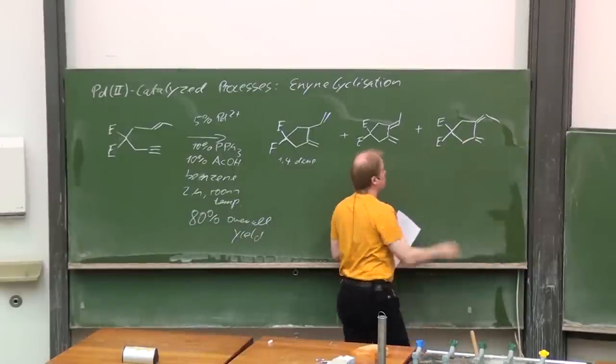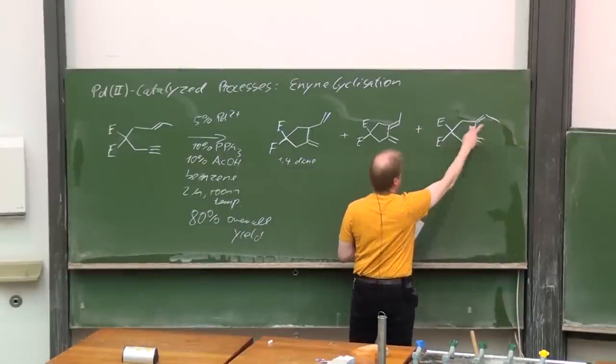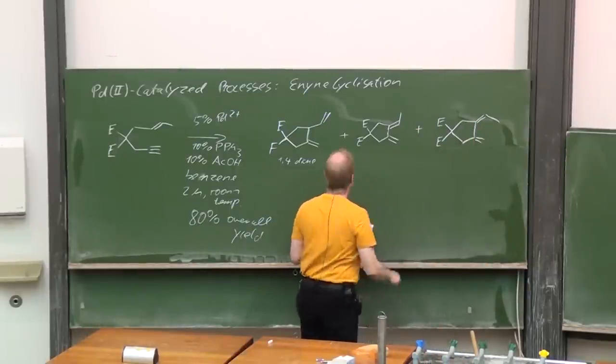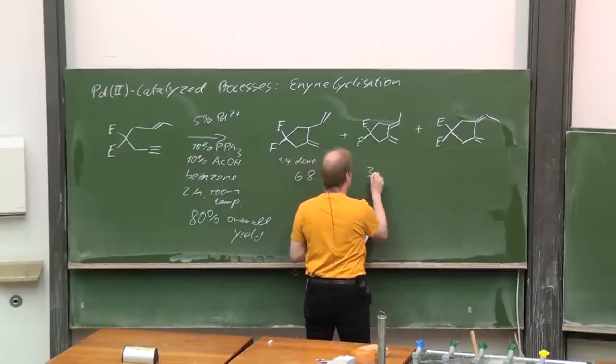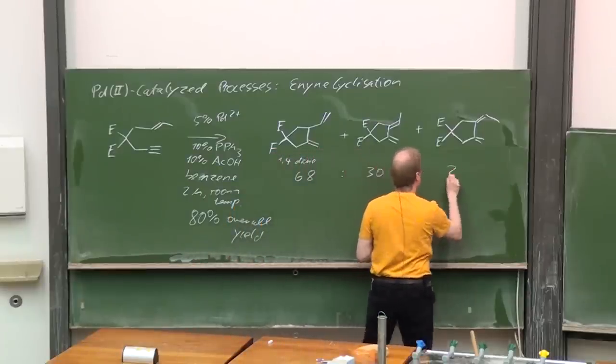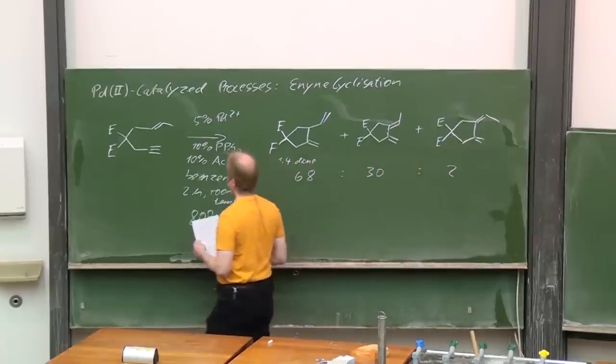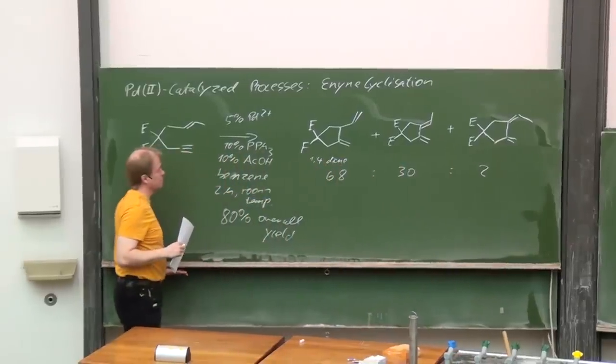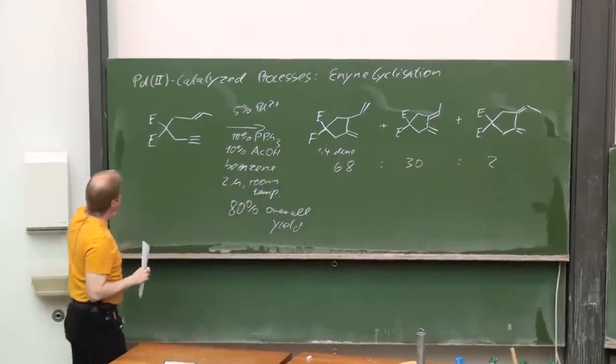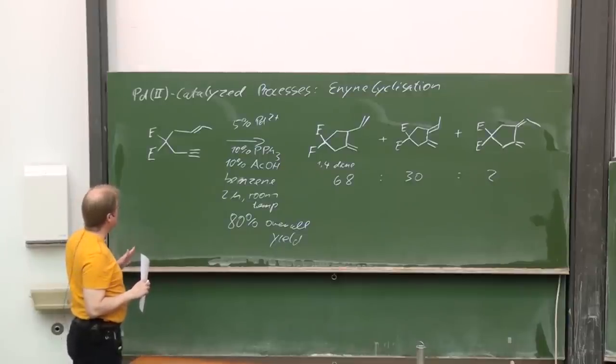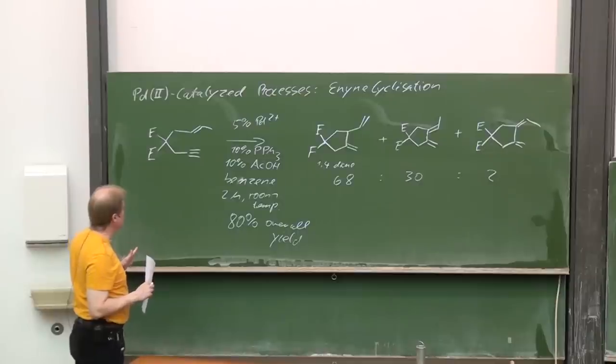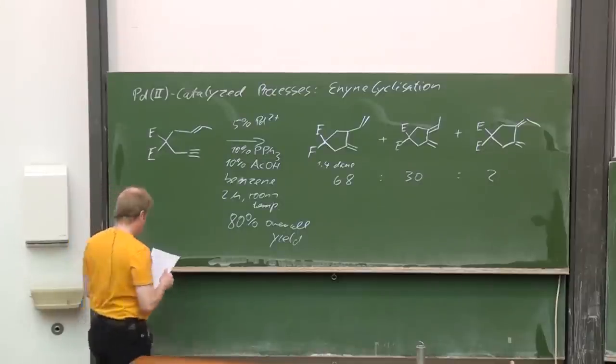This one is of course more sterically hindered and therefore the ratio is 68 to 30 to 2. So this is called enyne cyclization, but we should compare it with related reactions we very well know.